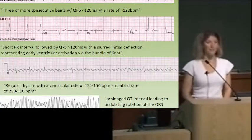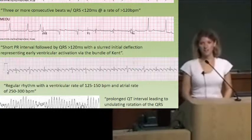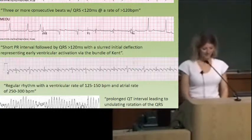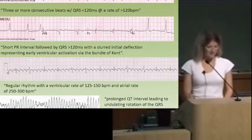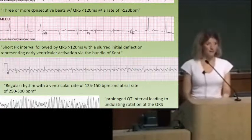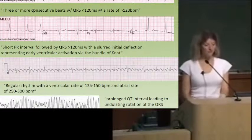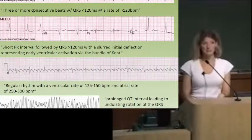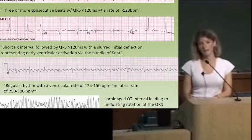The last one — torsades de pointes. They might describe it as a prolonged QT interval leading to undulating rotation of the QRS complex around the baseline. In the clinical vignette, look for some kind of electrolyte abnormality — low potassium and low magnesium can predispose a patient to this. And extending into the psych realm, a tricyclic overdose can also cause torsades.